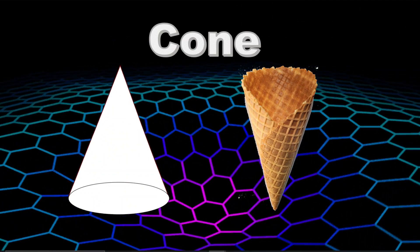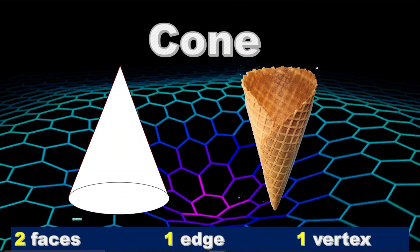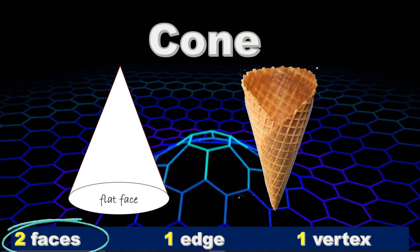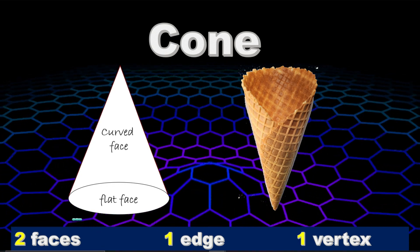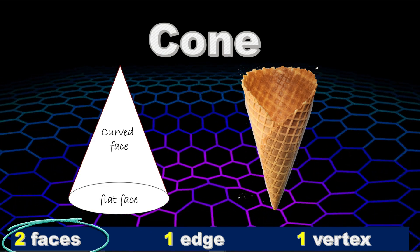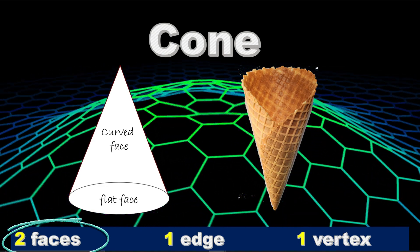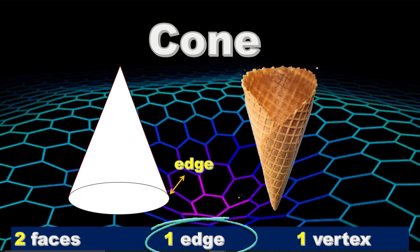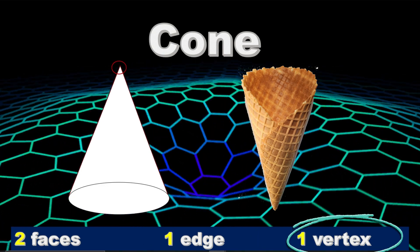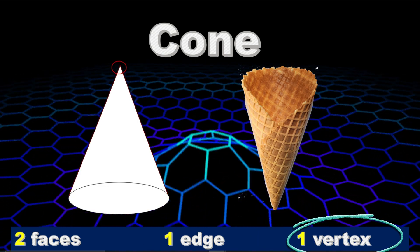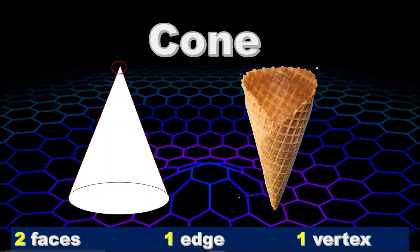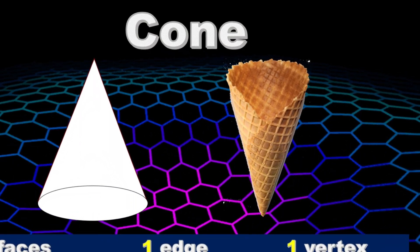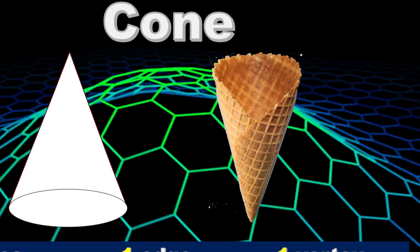Cone. Cone has two faces, a flat face and a curved face. It has one edge and one vertex. An example of a cone is a cone of an ice cream.